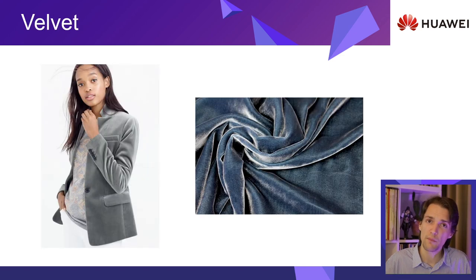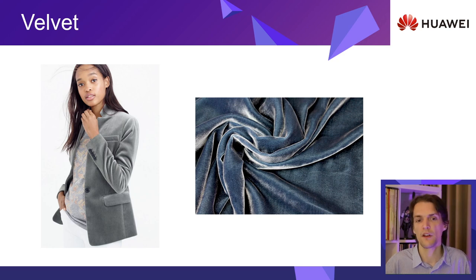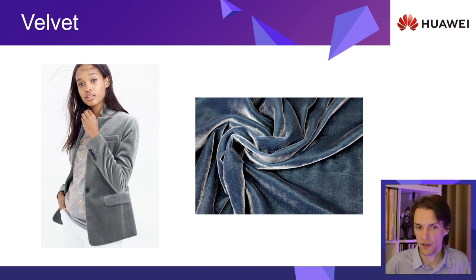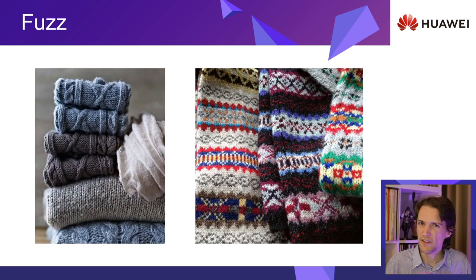This is most notable on velvet, a fabric composed of just these small strands, where the specular highlights have that very distinctive shape. There have been many improvements since the 2000 Ershickman original work, but they all relied on that original mathematical construct.